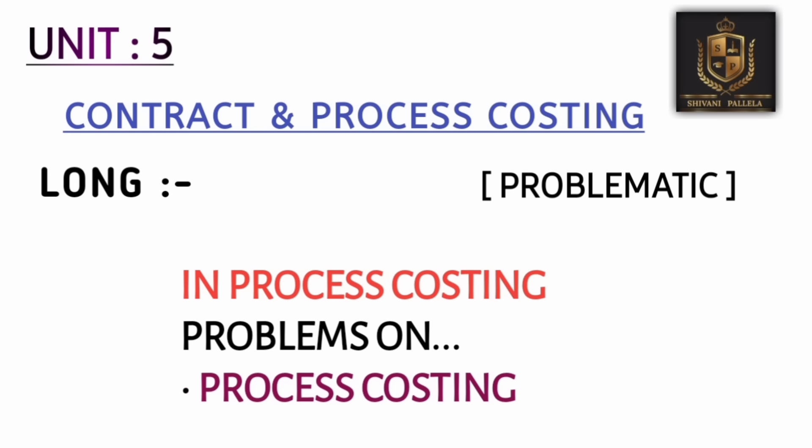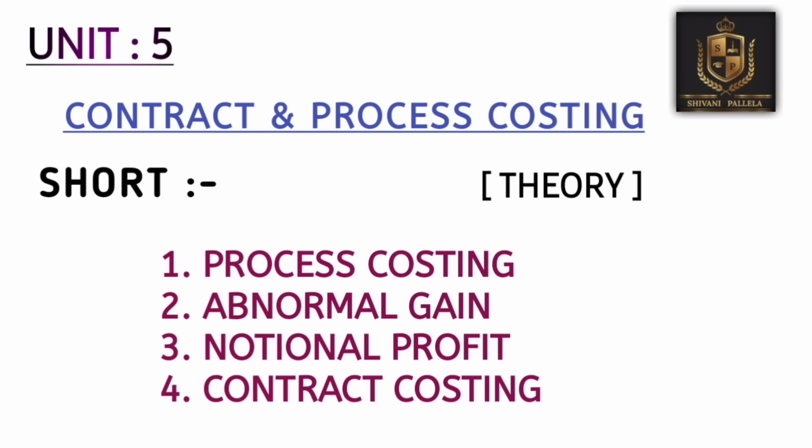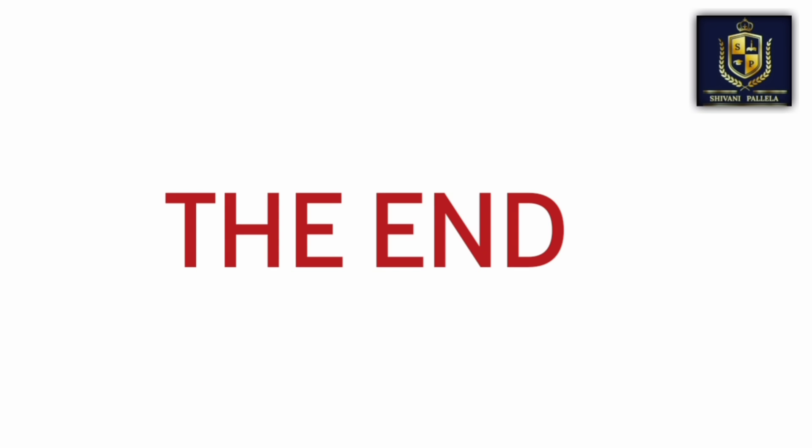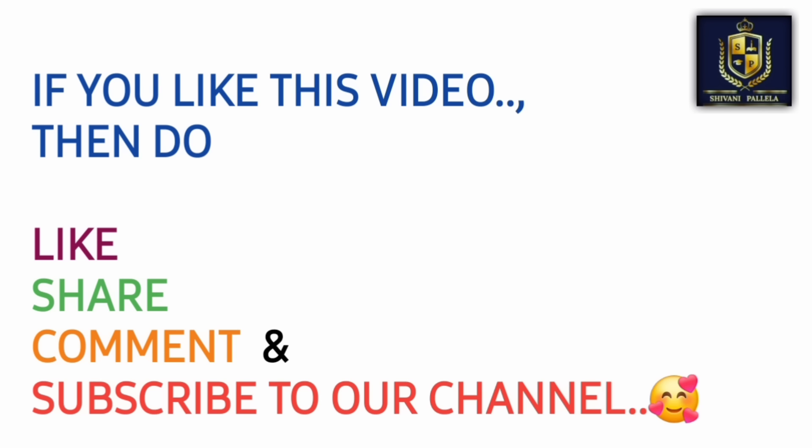For unit five, skip Contract Costing and go for Process Costing. Process Costing problematic questions are very easy. I will upload explanation videos on Process Costing. For the 12-mark compulsory question, Process Costing is essential. For short answers, Process Costing topics like Abnormal Gain and Notional Profit are easy to attempt. If you are perfect with the problematic steps in Process Costing, you can convert that knowledge into theory answers as well.